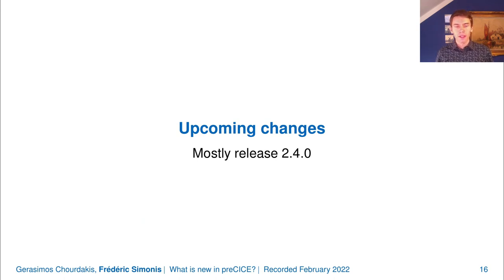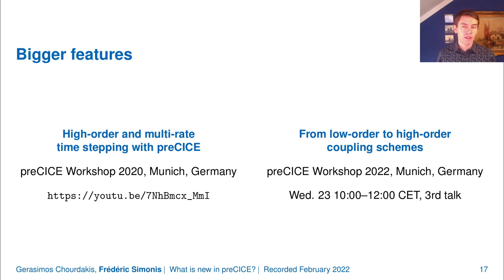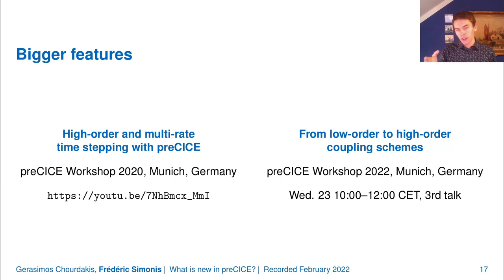Now the upcoming changes, mostly to be released in version 2.4 in a few months. The first big feature was already presented at the 2020 workshop by Benjamin Rodenberg: higher order time stepping schemes. This is already public — you can watch his talk on YouTube. There is also a developer talk planned for Wednesday from 10 to 12, which will be the third talk in that session.